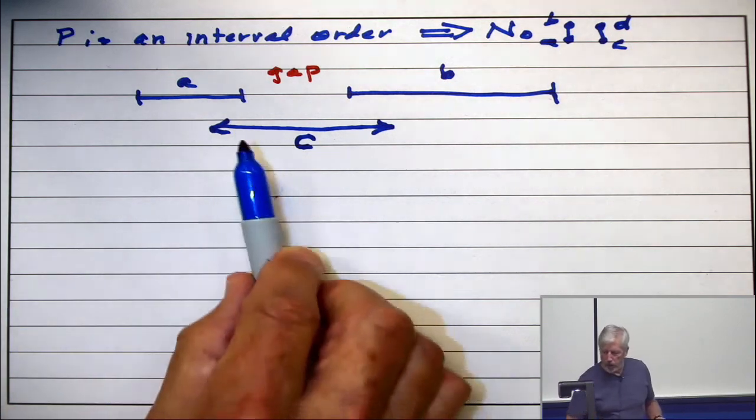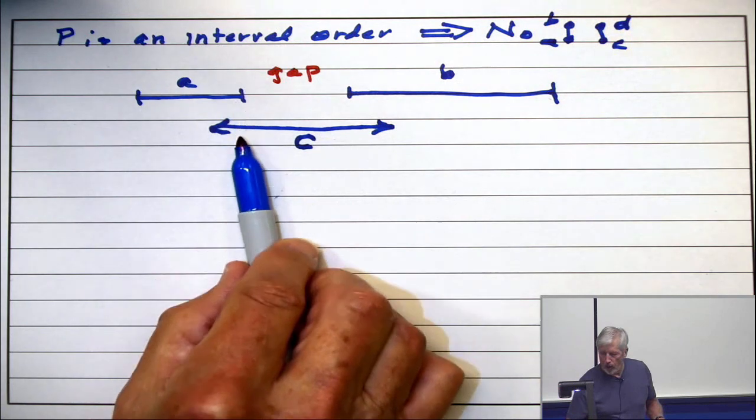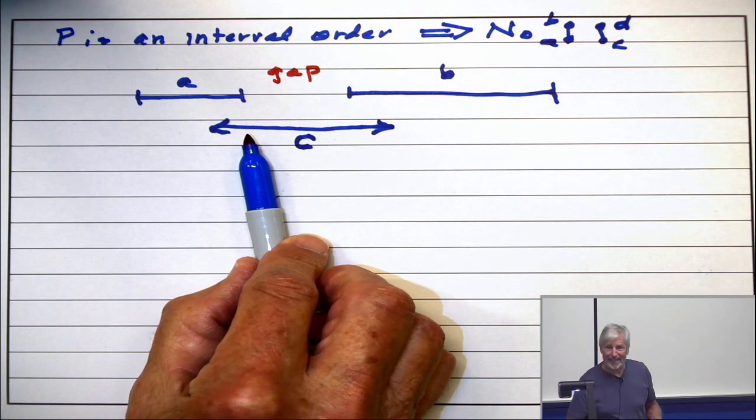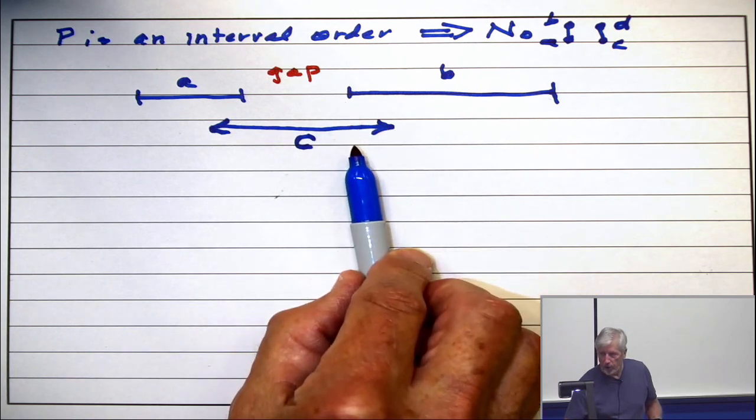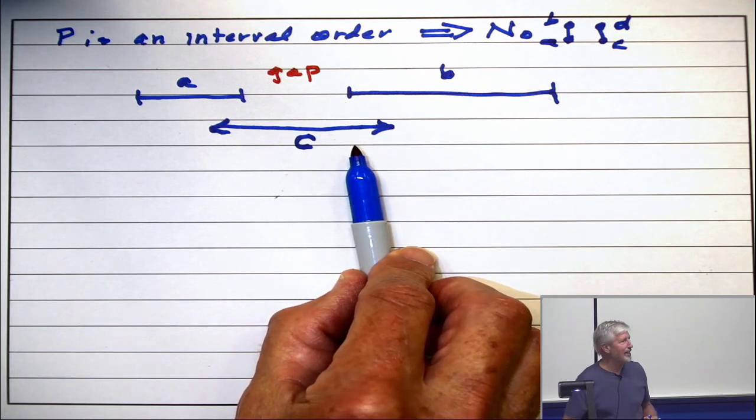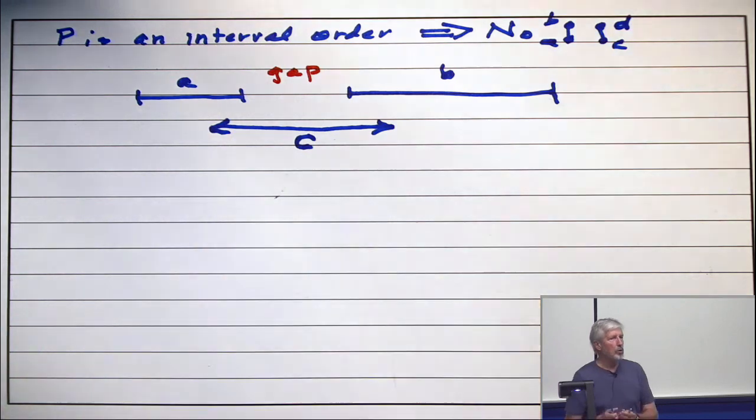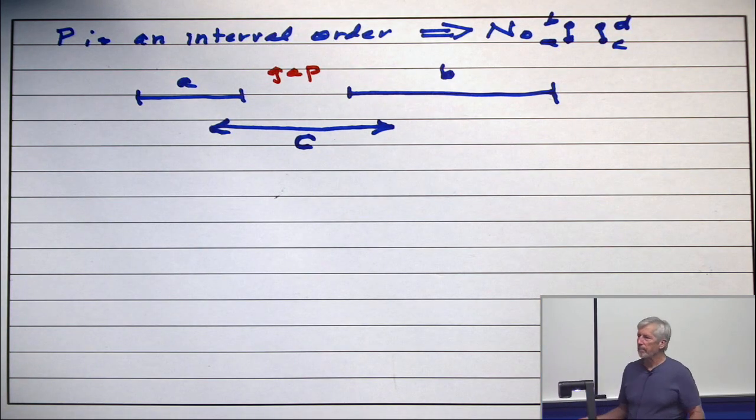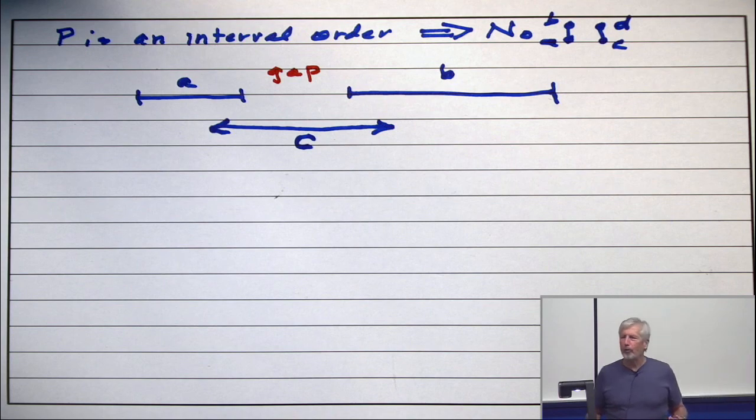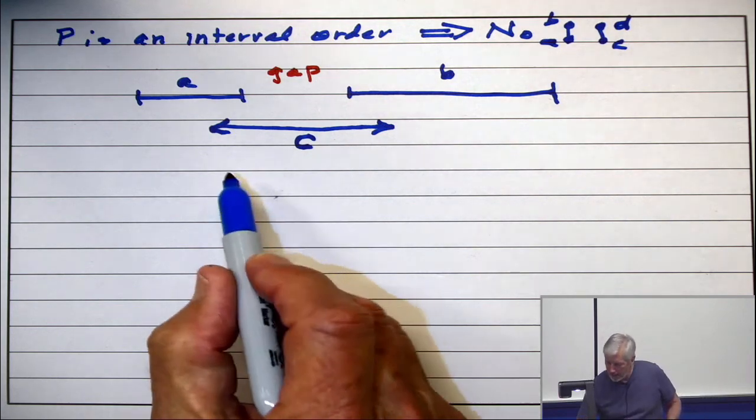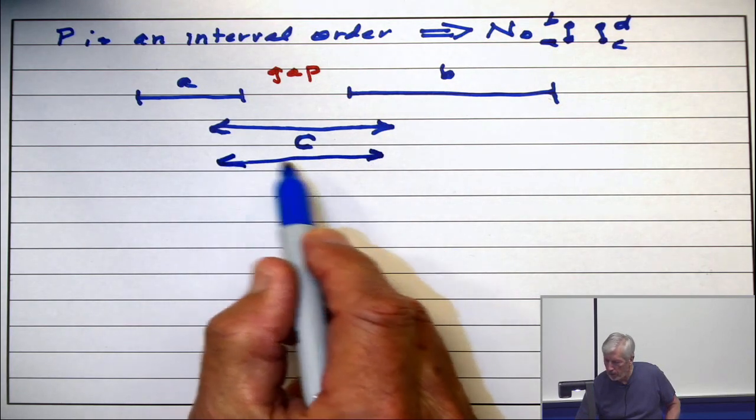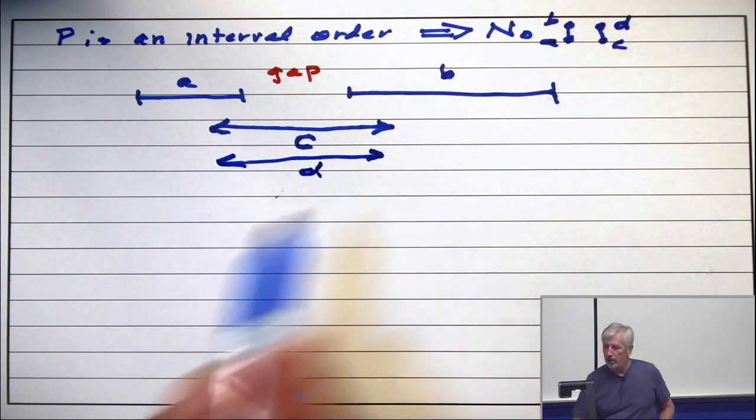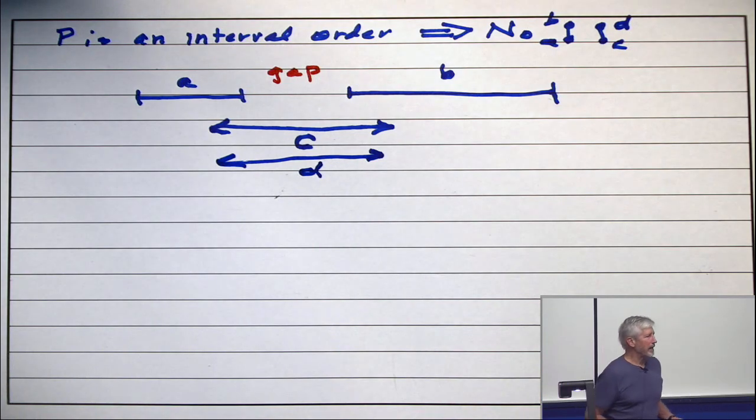I don't know where the endpoints of C are, but I know that C spans the gap. Again, if C started to the right of this, that would make A less than C. If C ended to the left of this, that would make C less than B. So C must span that gap. But exactly the same statement holds for D. D is incomparable with both A and B, so D spans the gap.